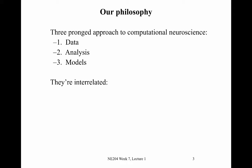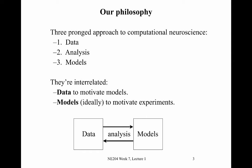These three different prongs are interrelated. We use data to motivate the types of models that we build, and then these models will ideally help us motivate experiments. Data analysis often sits somewhere in between — we can use it to summarize features we observe in the data, and this will help us inform the types of models that we construct.